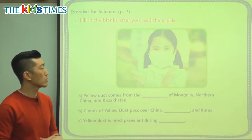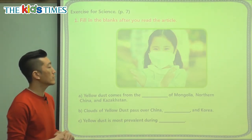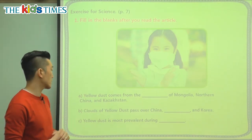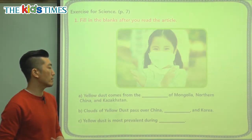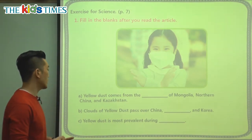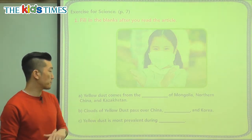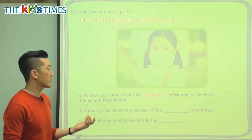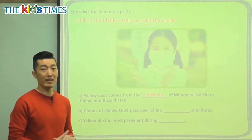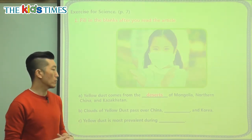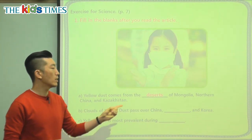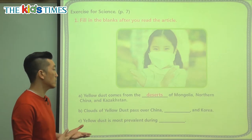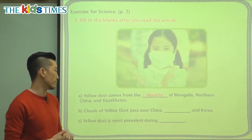If you look at this girl in the picture, she's wearing one type of mask and saying be careful — the air is not clean right now because of the yellow dust. So, yellow dust comes from the blank of Mongolia, northern China, and Kazakhstan. Where does it come from? That's right — it comes from the dry places, the deserts. Deserts are areas where they get very little or no rain. We don't have deserts in Korea, but there are a lot of deserts in Mongolia, northern China, and Kazakhstan.